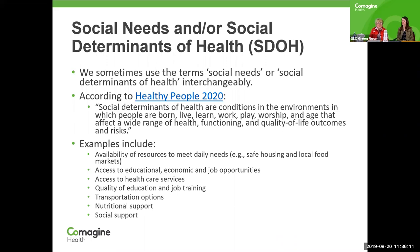According to Healthy People 2020, this is the definition of social determinants of health: there are conditions in the environments in which people are born, live, learn, work, play, worship, and age that affect a wide range of health, functioning, day-to-day functioning, and quality of life outcomes and risks.